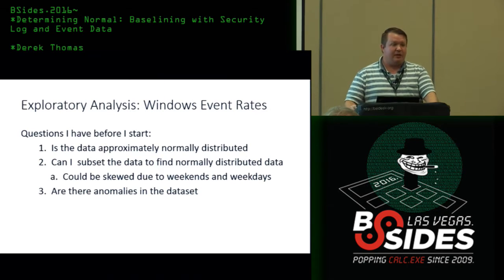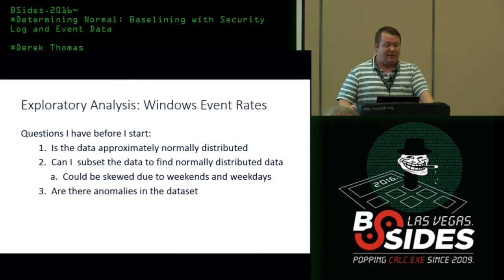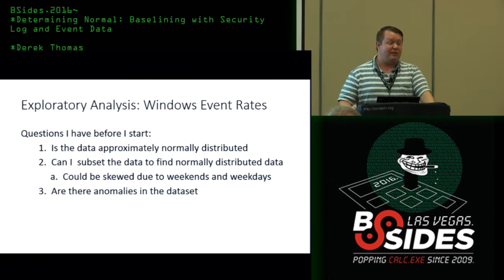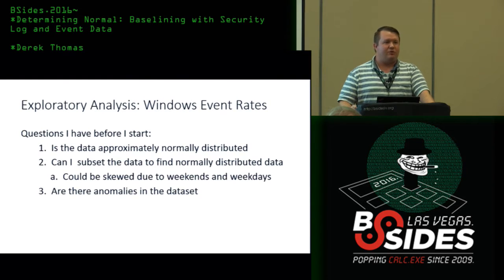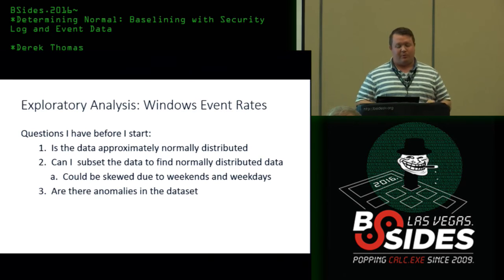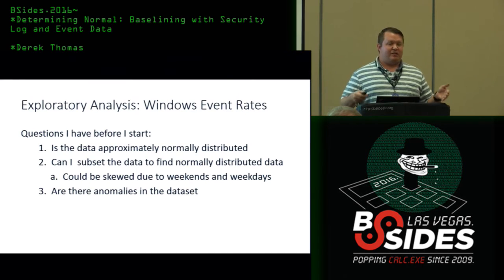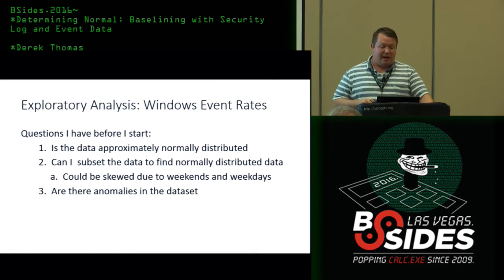Before you start, always ask some questions. For these baselines, you're asking: is this data approximately normal? That's a big one for developing statistically relevant thresholds. If the data is not normal, can you make it normal — can you subset the data? With this, I'm assuming weekdays and weekends will differ significantly, so you may have to model those separately. And are there anomalies within the data set? Once you look at the data, are there extreme anomalies you'll have to deal with?